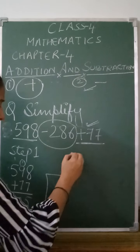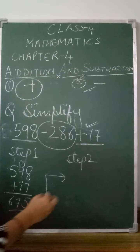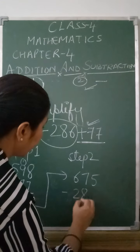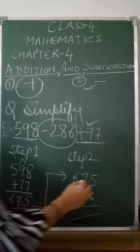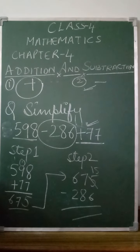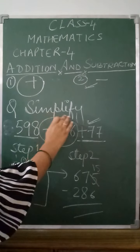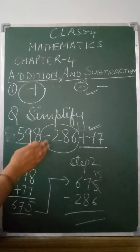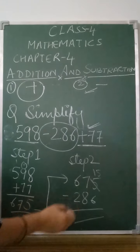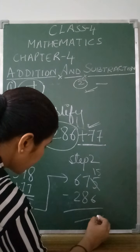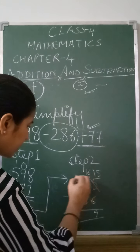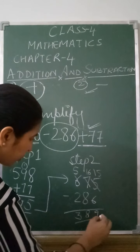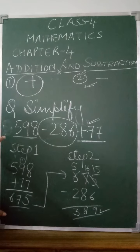You can change the order of the numbers. First add the positive numbers — Step 1 gives us 675. Now Step 2: subtract the negative number, which is 286. Doing the subtraction: 15 minus 6 is 9, 16 minus 8 is 8, and 5 minus 2 is 3. So 389 is the answer.